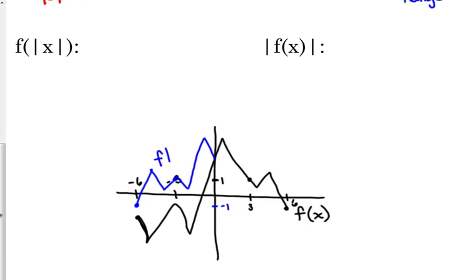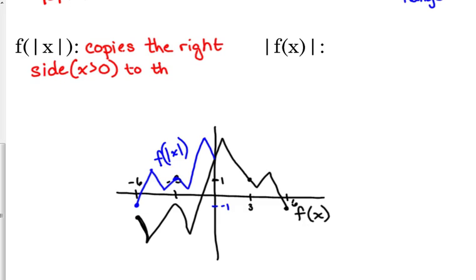So, this is one of those things, if you understand it, great, if not, I am satisfied with if you just memorize that that copies the right side of the graph. And when I say right side, I mean when x is greater than 0, it copies it to the left side. And the right side remains unchanged.